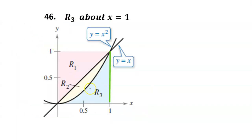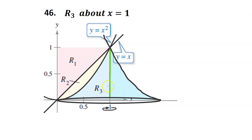In number 46, we will rotate the blue region R3 around the line x equals 1. When you rotate R3 around the line x equals 1, you get a solid that's shaped like an inverted funnel. A slice of the solid will be a disk, and we can use disks like this one to calculate the volume of the solid. Because the disks are stacked vertically, ultimately we will have to integrate with respect to y.